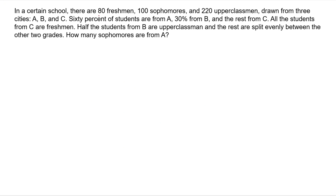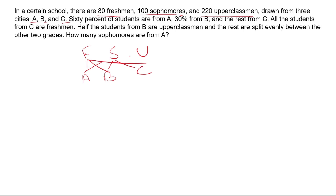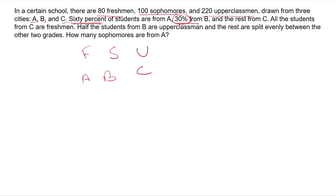There are 80 freshmen, 100 sophomores, and 220 upperclassmen. They are from cities A, B, and C. Sixty percent of students are from A, 30 percent from B, and 10 percent from C — so 40 students are from C. All students from C are freshmen.